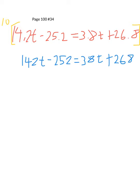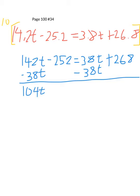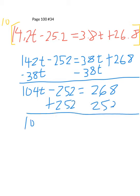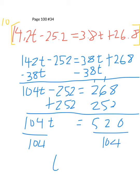Let's see. You can minus 38t from both sides of this equation. And you get 104t minus 252 equals 268. Add 252 to both sides, and you get 104t equals 520. Divide both sides by 104, and you get t equals 5.